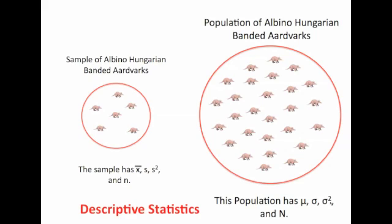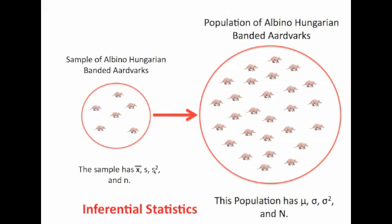And mu, sigma, sigma-squared, and kappa N are also descriptive statistics. Our desire is to move towards inferential statistics, in which we take a sample of albino-hungarian banded aardvarks of size N, and we use X-bar, S, and S-squared to predict the mu, the standard deviation, and the variance of the population.